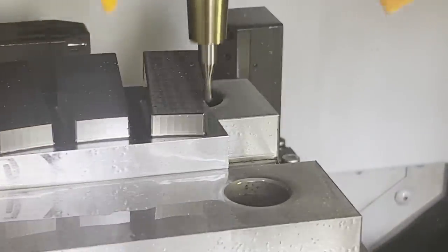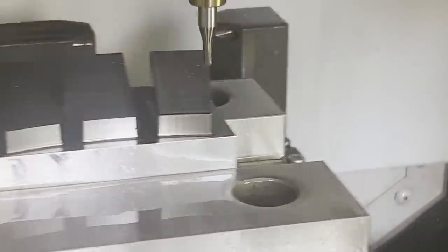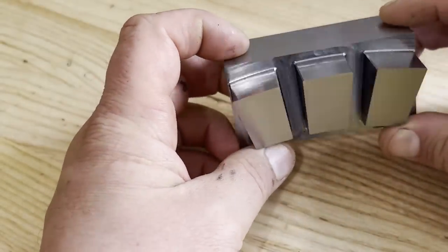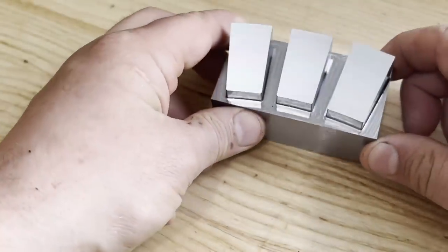This is the rightmost land getting cut with the smaller step over. So there's the finished product and you can see they really don't look all that different.